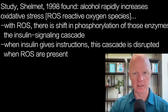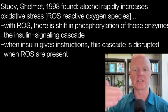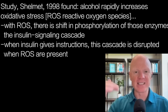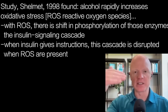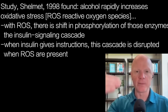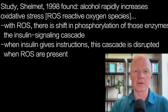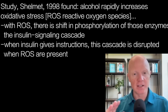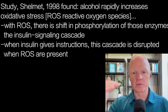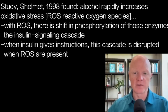So when insulin comes to the cell and tells it to do something, that involves a series of events — one enzyme affecting another affecting another — and the change in oxidative stress caused by ethanol starts to disrupt some of this signaling.